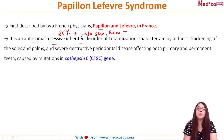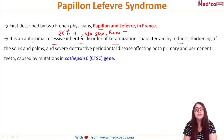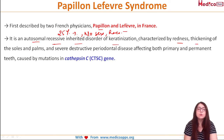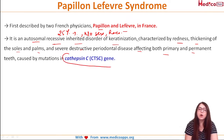Basically it is a disorder of keratinization, which is why the second image showed hyperkeratinization of the palmar surfaces. The oral features include redness of the gingiva, thickening of the soles and palms — that is hyperkeratinization — severe destruction of the periodontium, and it affects both the primary and permanent teeth.